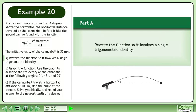If a cannon shoots a cannonball theta degrees above the horizontal, the horizontal distance traveled by the cannonball before it hits the ground can be found with a function d of theta equals vi squared times sin theta cos theta over 4.9. The initial velocity of the cannonball is 36 meters per second.